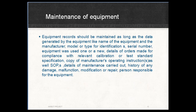Equipment records should be maintained as long as the data generated by the equipment is retained. Records include: name of the equipment and the manufacturer, model or type for identification, serial numbers, whether the equipment was used new or second-hand, details of the order made for compliance, calibration tests and standard specifications, copy of the manufacturer's operating instructions as well as SOPs, details of maintenance carried out, and history of any damage, malfunction, modification, or repair.